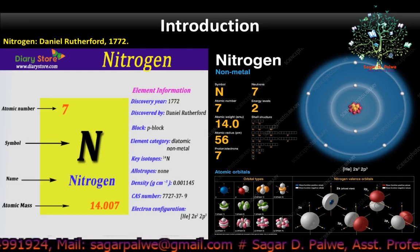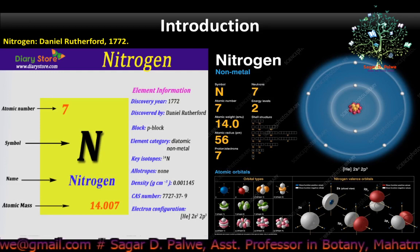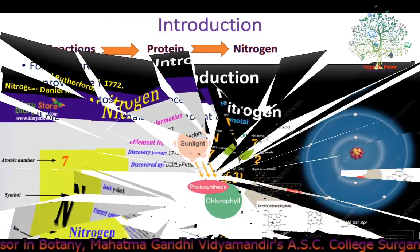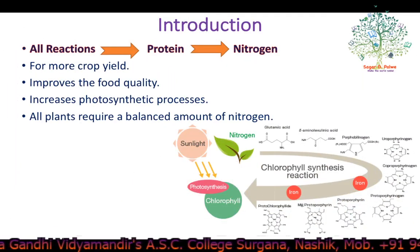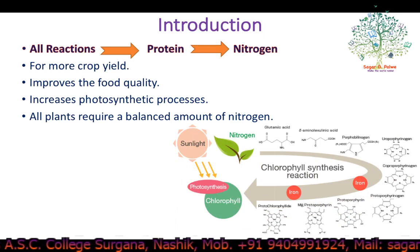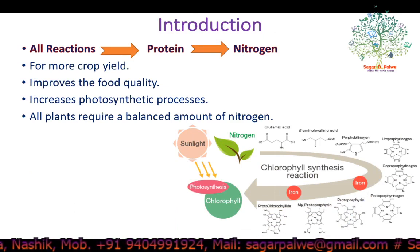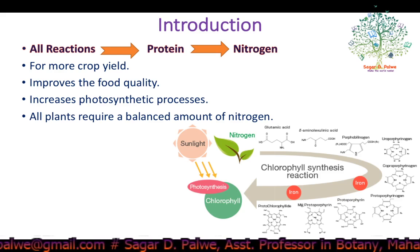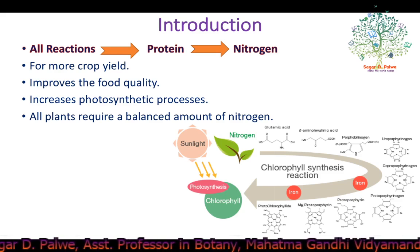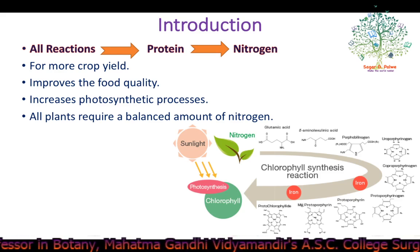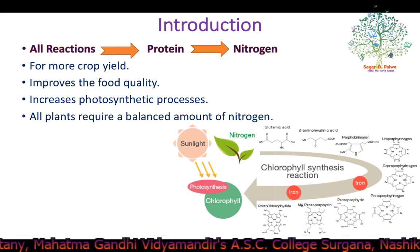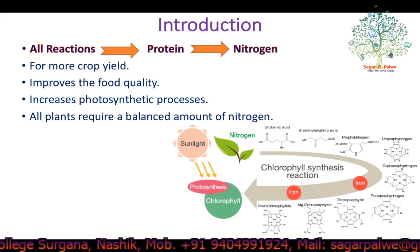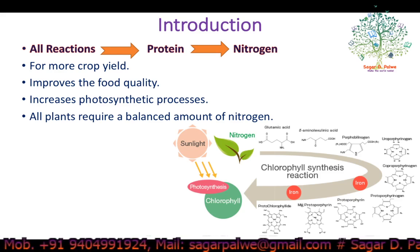Liquid nitrogen is also used to cryogenically freeze objects in cryopreservation. Nitrogen is an important micronutrient because it is incorporated in nucleic acids and proteins. Atmospheric nitrogen, which is the diatomic molecule N2 or dinitrogen, is the largest pool of nitrogen in terrestrial ecosystems. However, plants cannot make use of this nitrogen because they do not have the necessary enzymes to convert it into biologically useful forms.